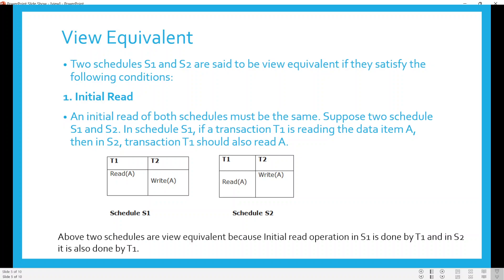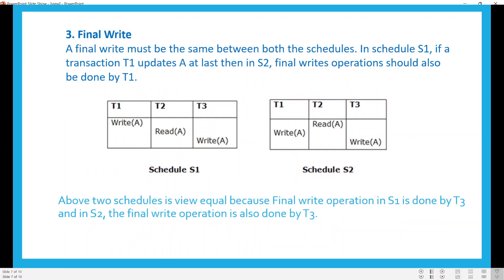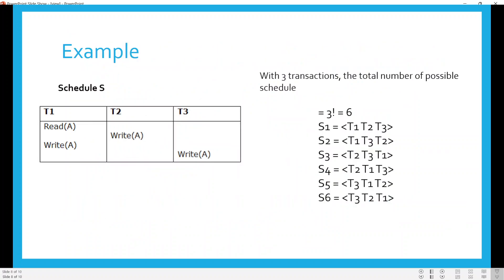So the three conditions are: first, initial read; second, updated read; and third, final write. Let us see one example. We have a schedule with transactions T1, T2, T3. The operations are: read A in T1, followed by write A in T2, then write A in T1, and the final operation is write A in T3. With these three transactions we can have various possible schedules — in fact 3 factorial equals 6 possible orderings.